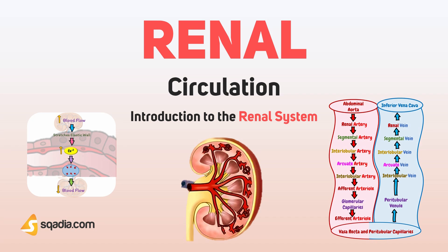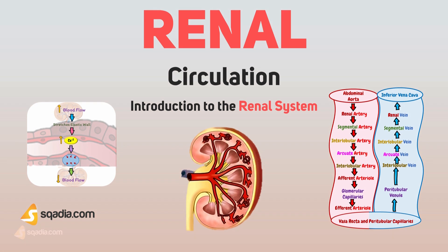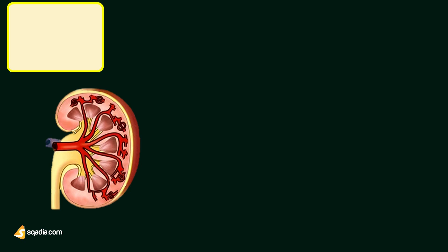In this section, we will talk about the renal circulation. Blood vessels of the kidneys are highly specialized to facilitate the functions of nephrons in the formation of urine. In adults, during resting conditions, both kidneys receive 1,300 milliliters of blood per minute, or about 26% of the cardiac output. Maximum blood supply to the kidneys has functional significance.